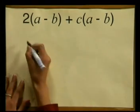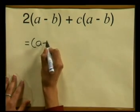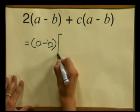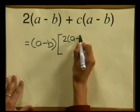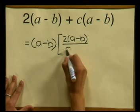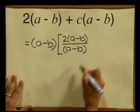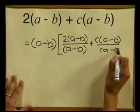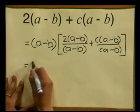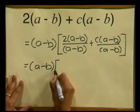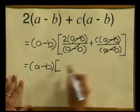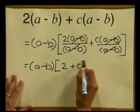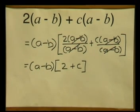Now we can do the same thing in our question. We can take out the common bracket a minus b. And what we are left with — let's show you the extra step — is 2 multiplied by a minus b divided by our common factor a minus b, plus c multiplied by a minus b divided by our common factor a minus b. And we should notice that our common factor is going to cancel out — those cancel out, those cancel out — and we are going to be left with 2 plus c. And we have factorized our expression. And can you see why we say to take out the common factor means to divide?